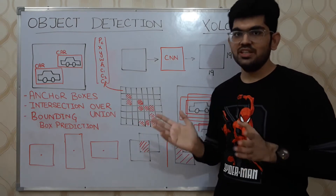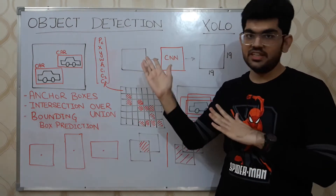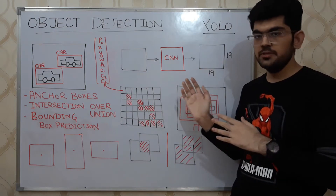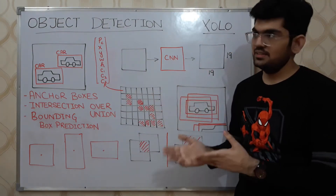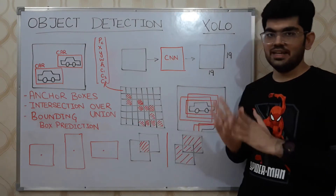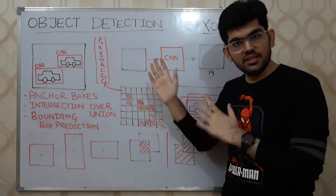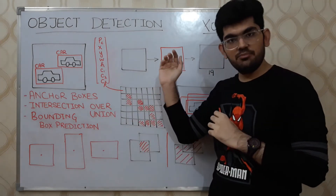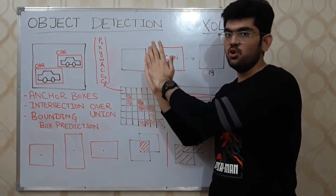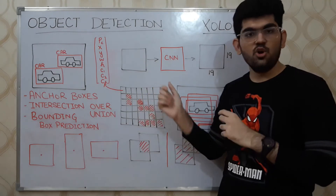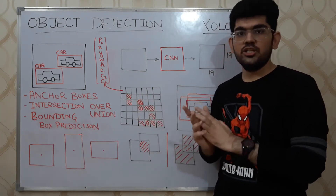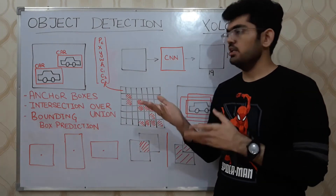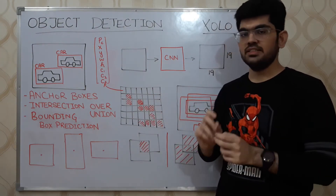YOLO is a deep learning technique for object detection. We pass an input image through a convolutional neural network and get an output matrix, typically of size 19x19 for the YOLO algorithm. If we overlap this 19x19 matrix over the input image, each of those individual boxes tells what is present in that region — it could be a car, a truck, a motorcycle, or nothing useful like road.